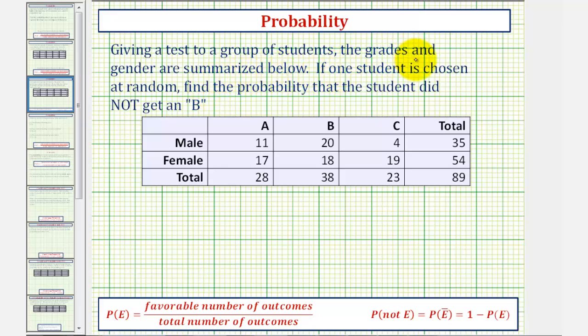Giving a test to a group of students, the grades and gender are summarized below. If one student is chosen at random, find the probability that the student did not get a B.